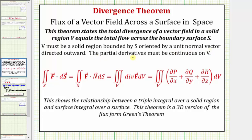The partial derivatives of the components of the vector field F must be continuous on V. So under these conditions, the flux integral, often expressed in one of these two forms, is equal to the triple integral over the region V of the divergence of the vector field F differential V, which can also be expressed in this form here. This shows the relationship between a triple integral over a solid region and a surface integral over a surface.